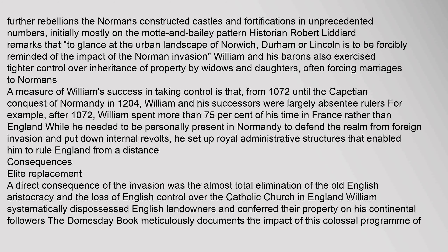William and his barons also exercised tighter control over inheritance of property by widows and daughters, often forcing marriages to Normans. A measure of William's success in taking control is that from 1072 until the Capetian conquest of Normandy in 1204, William and his successors were largely absentee rulers. After 1072, William spent more than 75 percent of his time in France rather than England. While he needed to be personally present in Normandy to defend the realm from foreign invasion and put down internal revolts, he set up royal administrative structures that enabled him to rule England from a distance.